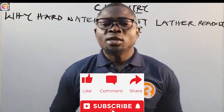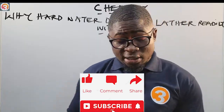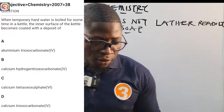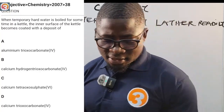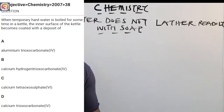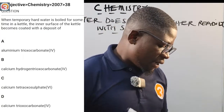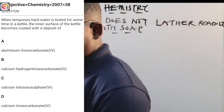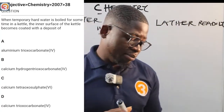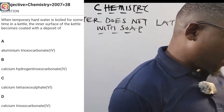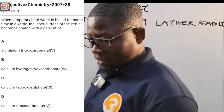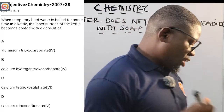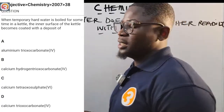We're going to see a question from 2007, number 38. It says: when temporary hard water is boiled for some time in a kettle, the inner surface of the kettle becomes coated with a deposit of — A: aluminum carbonate, B: calcium hydrogen carbonate, C: calcium tetraoxosulphate(VI), D: calcium carbonate.